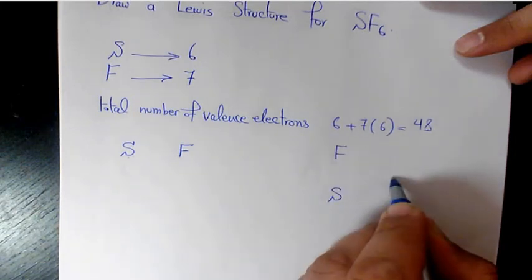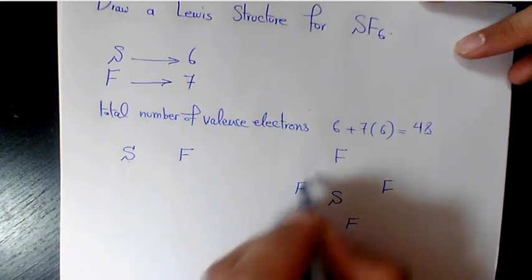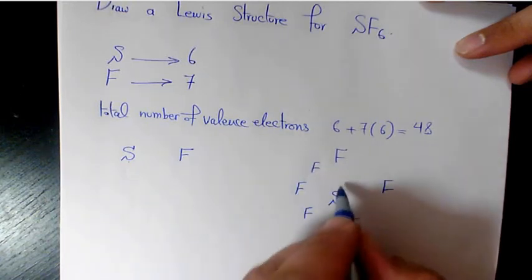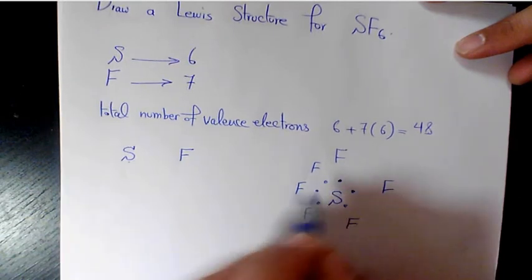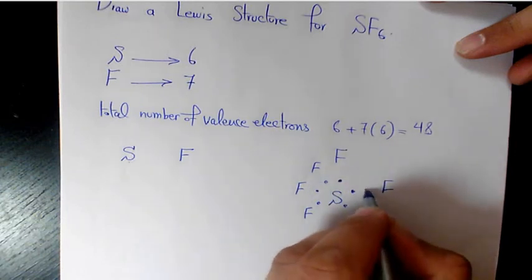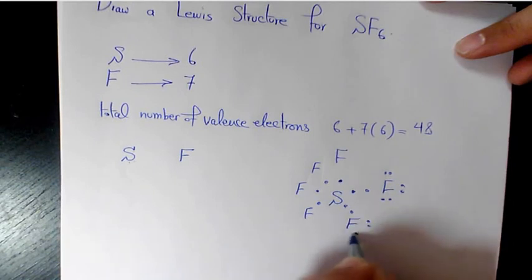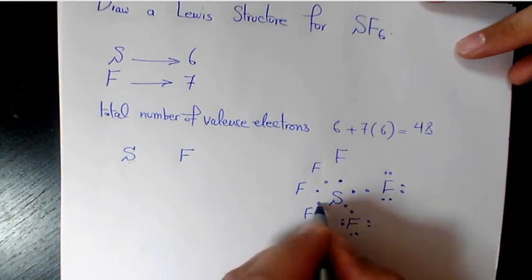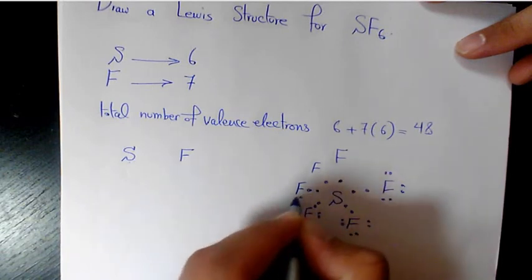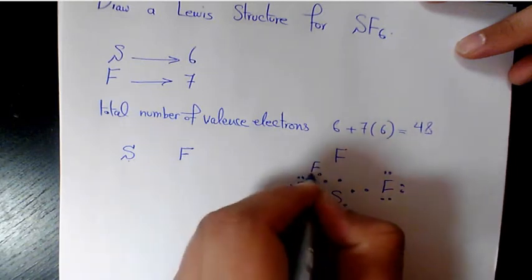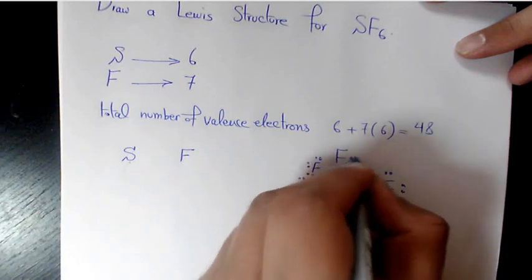So we have sulfur in here and we must have 6 fluorines around it: 1, 2, 3, 4, 5, 6. And for fluorine we add lone pairs: 1, 2, 3, 4, 5, 6, 7 on each fluorine.